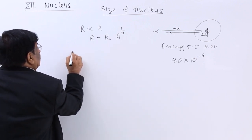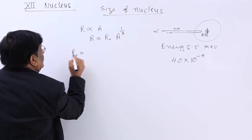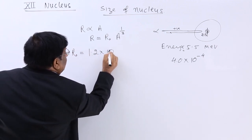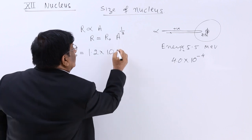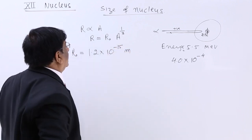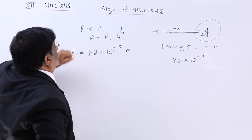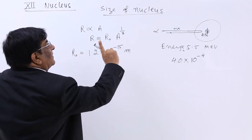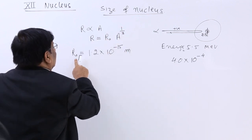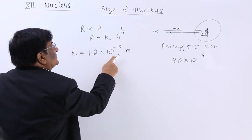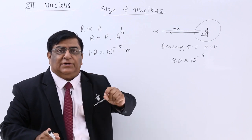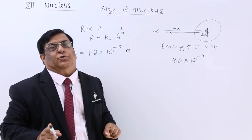This R₀ constant, it has a value. This is 1.2 into 10 to the power minus 15. So you see, if atomic mass is 1, then 1 to the power one-third is 1. At that time R is equal to this much. And atomic mass 1 is for hydrogen, and in hydrogen, in the nucleus we have only one proton. So for one proton, this is the diameter of the proton.